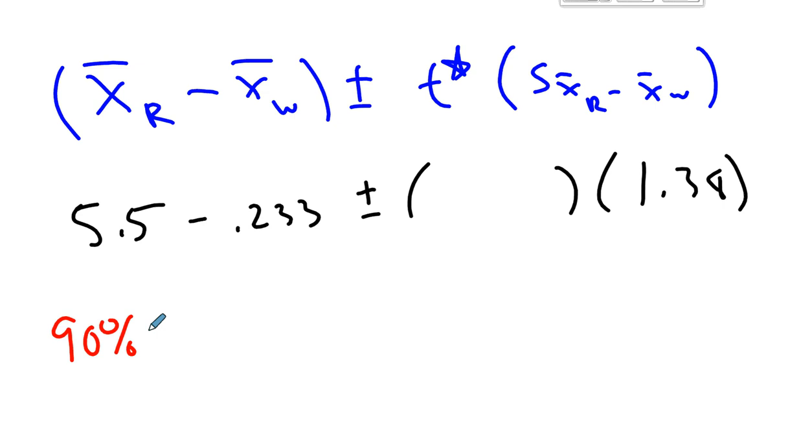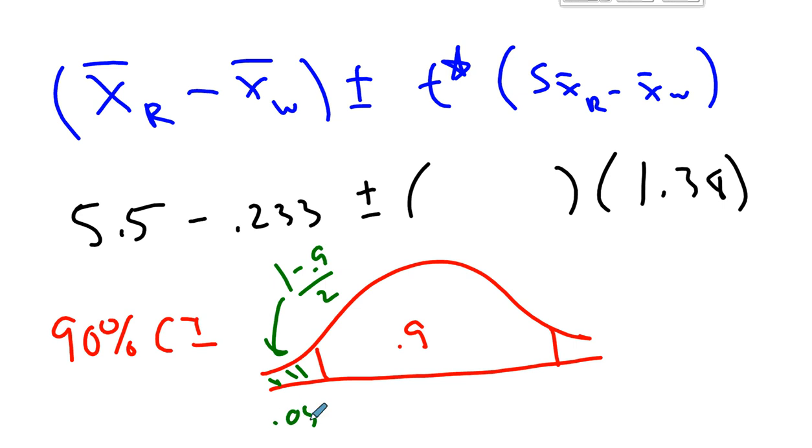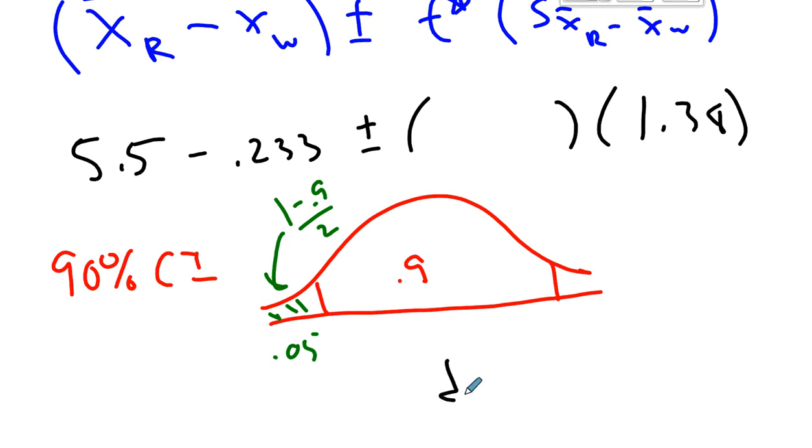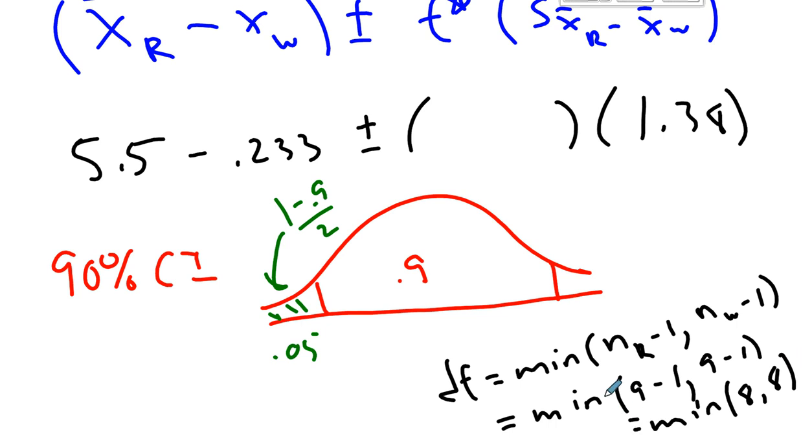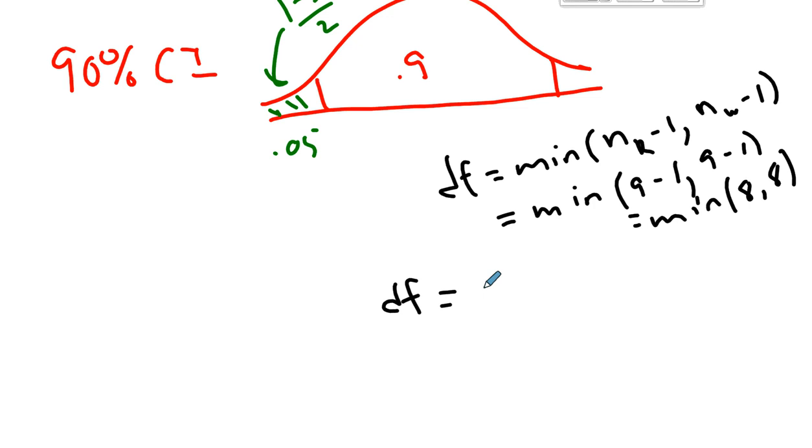Question at hand asks for a 90% confidence interval. So draw a picture for yourself. Mark off an area of 0.9 in the middle, and then remind yourself how to get the area in the tail. Well, you take 1 minus 0.9 and divide by 2, so you'll get 0.05. One more thing we're going to need, we're going to need degrees of freedom. So degrees of freedom are always the minimum of your two sample sizes. So the sample size of red wine drinkers minus 1, and the sample size of white wine drinkers minus 1. And in this case, both sample sizes were the same. So you're asking for the min of the number 8 and the number 8. The minimum of 8 and 8 is just 8. So our degrees of freedom here are 8.